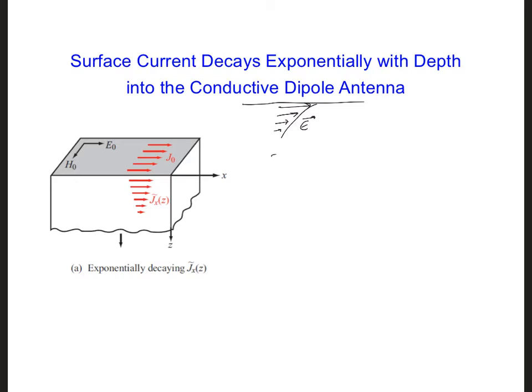And since J current density is equal to sigma E, then the conduction current will also decay exponentially with depth into the antenna, which you can see here. The result of all this is that we get a surface current along the surface all along the outside of the short dipole antenna.